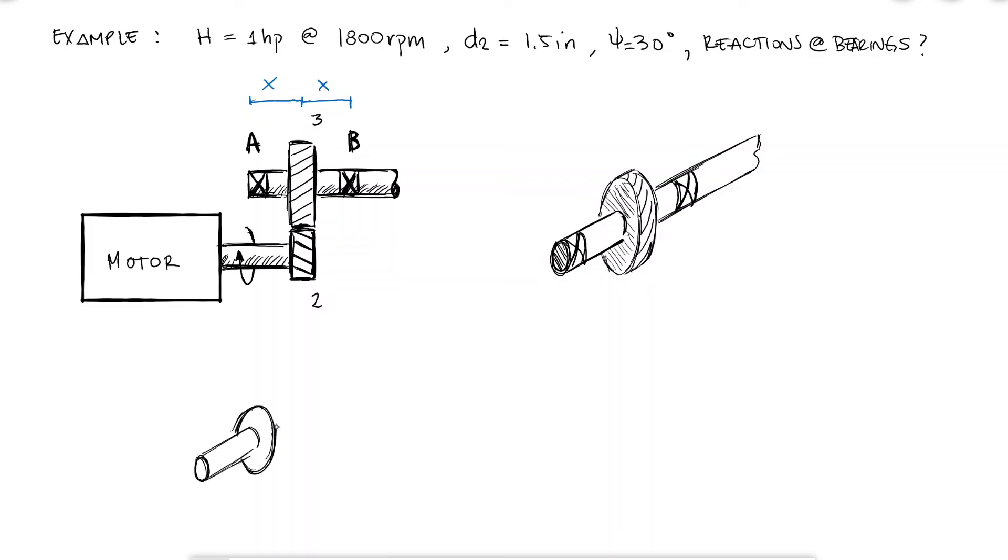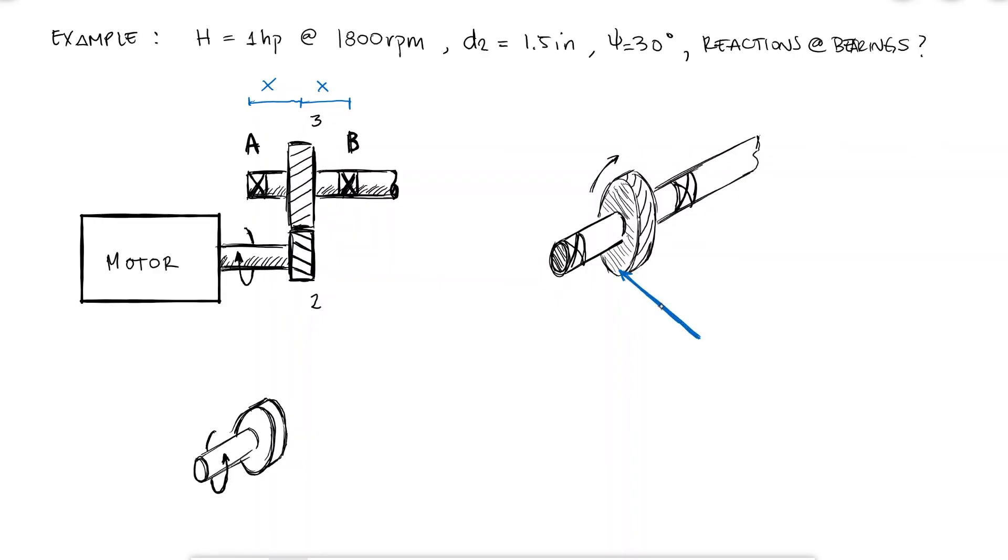If gear 2 is rotating in the direction the figure shows, it means that gear 3 would be rotating in the opposite direction which means that the tangential force from gear 2 to 3 is what's causing that rotation motion.